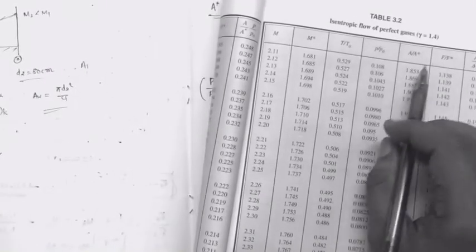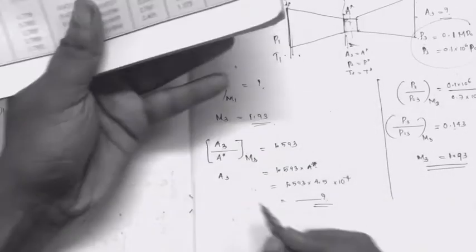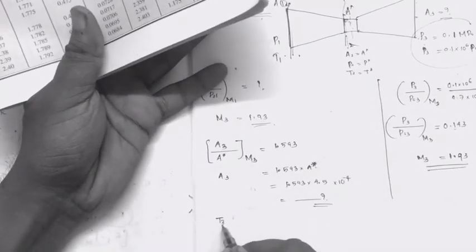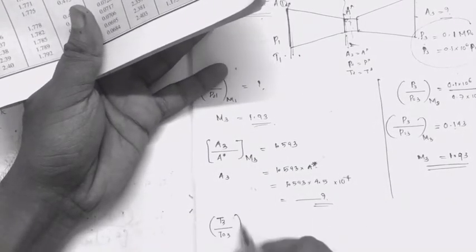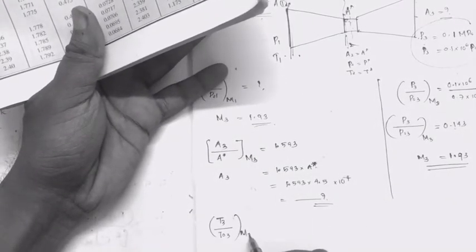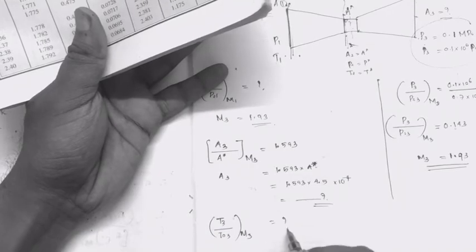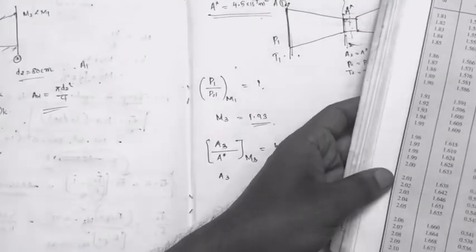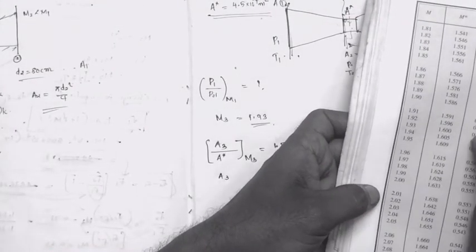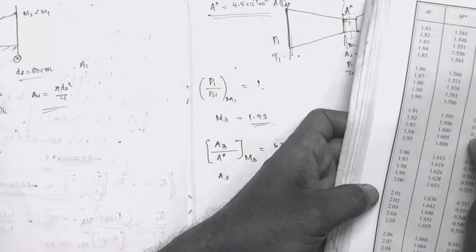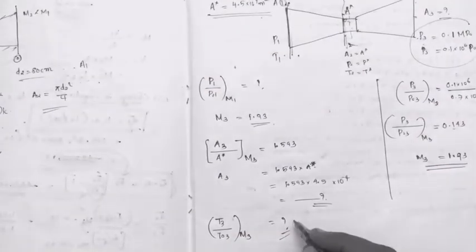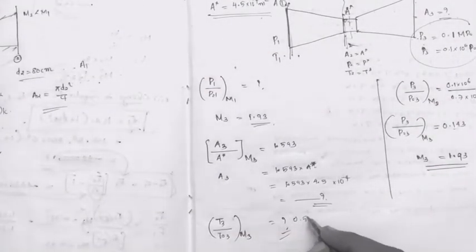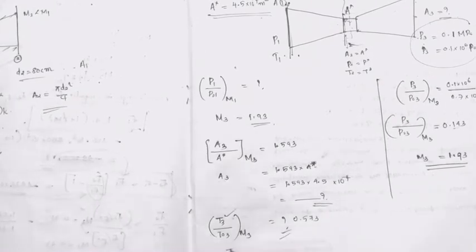From the isentropic table, we find T3 by T03 at Mach number M3 equal to 1.93. The temperature ratio T/T0 is 0.573. So T3 equals T03 multiplied by 0.573, giving us the static exit temperature T3.